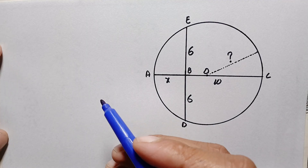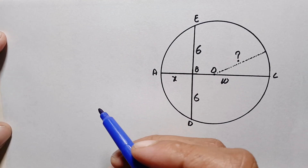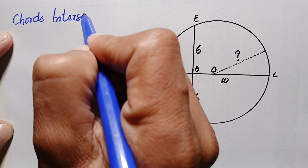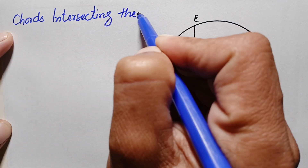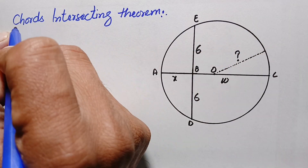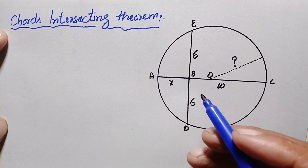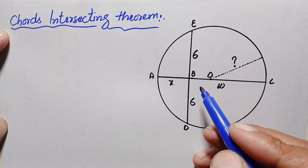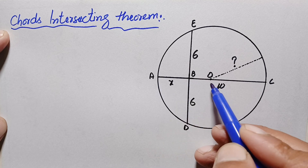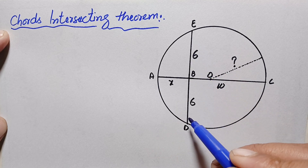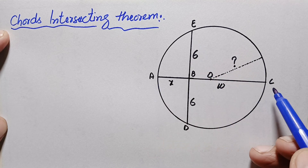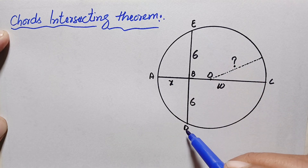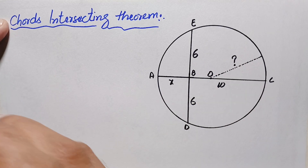By the chords intersecting theorem, if two chords inside a circle intersect at a point, then the product of the two segments of one chord equals the product of the two segments of the second chord. In chord AC we have segments AB and BC, and in chord DE we have segments DB and BE.